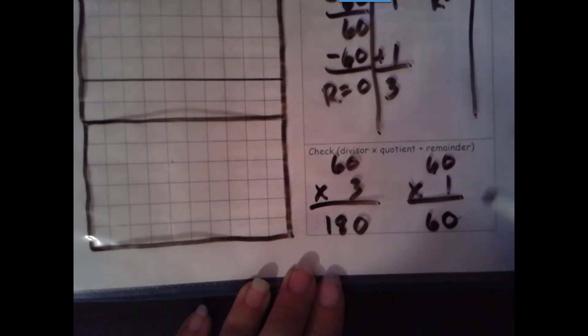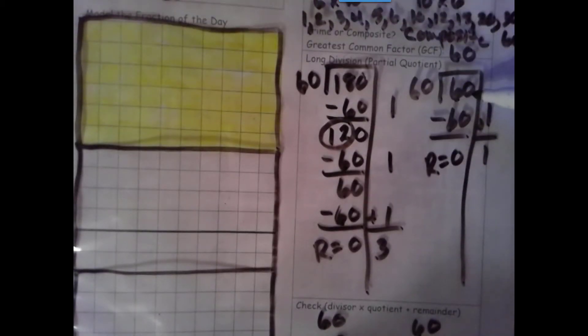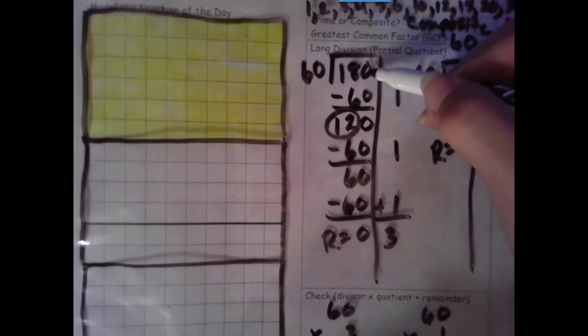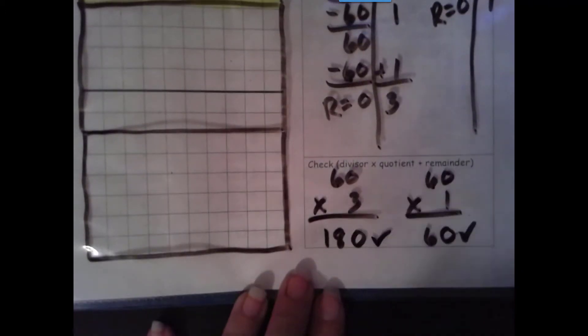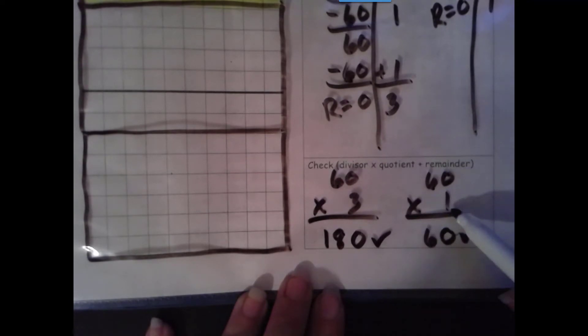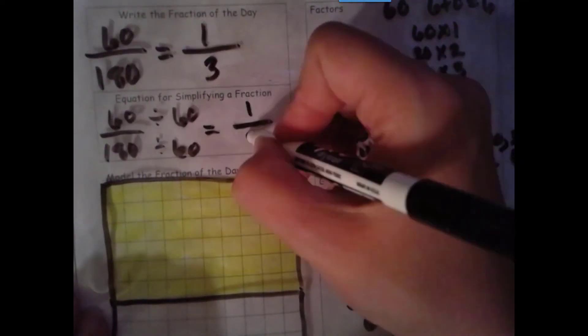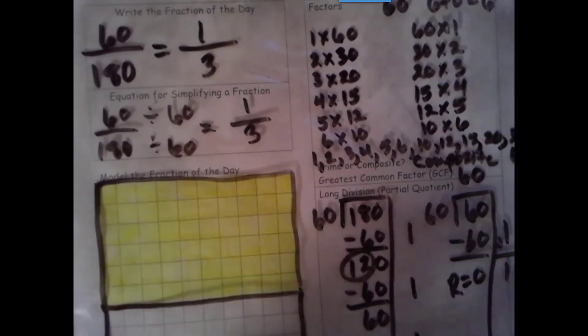Let's go ahead and check. 60, that matches our dividend up here. Here, 180, that matches our dividend right there. Check. So our numerator is definitely one, and our denominator is definitely three.